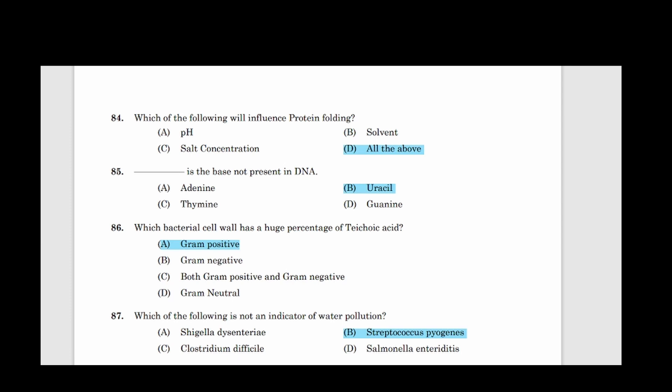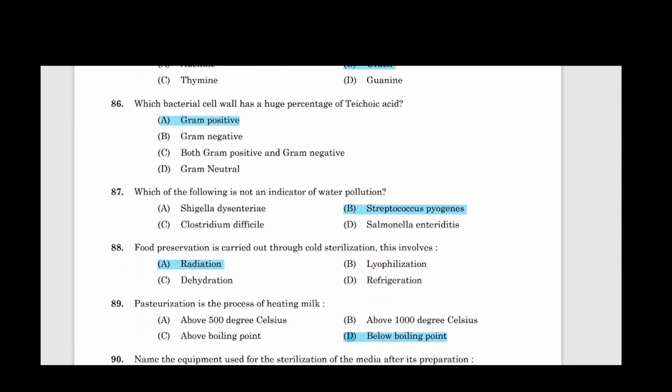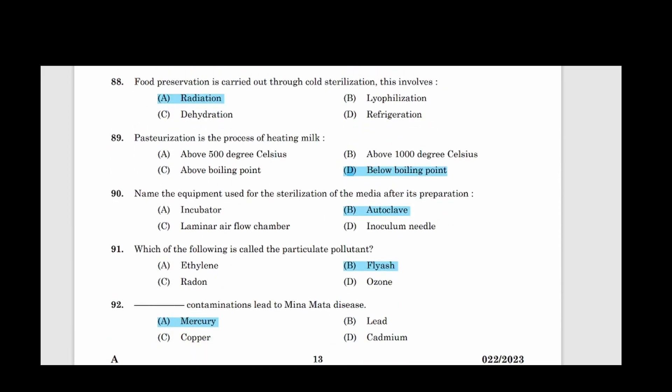86: Which bacterial cell has a huge percentage of teichoic acid? Correct answer option A, Gram positive. 87: Which of the following is not an indicator of water pollution? Correct answer option B, Streptococcus pyogenes. 88: Food preservation is carried out through cold sterilization. This involves answer option A, Radiation. 89: Pasteurization is the process of heating milk. Answer option D, Below boiling point.